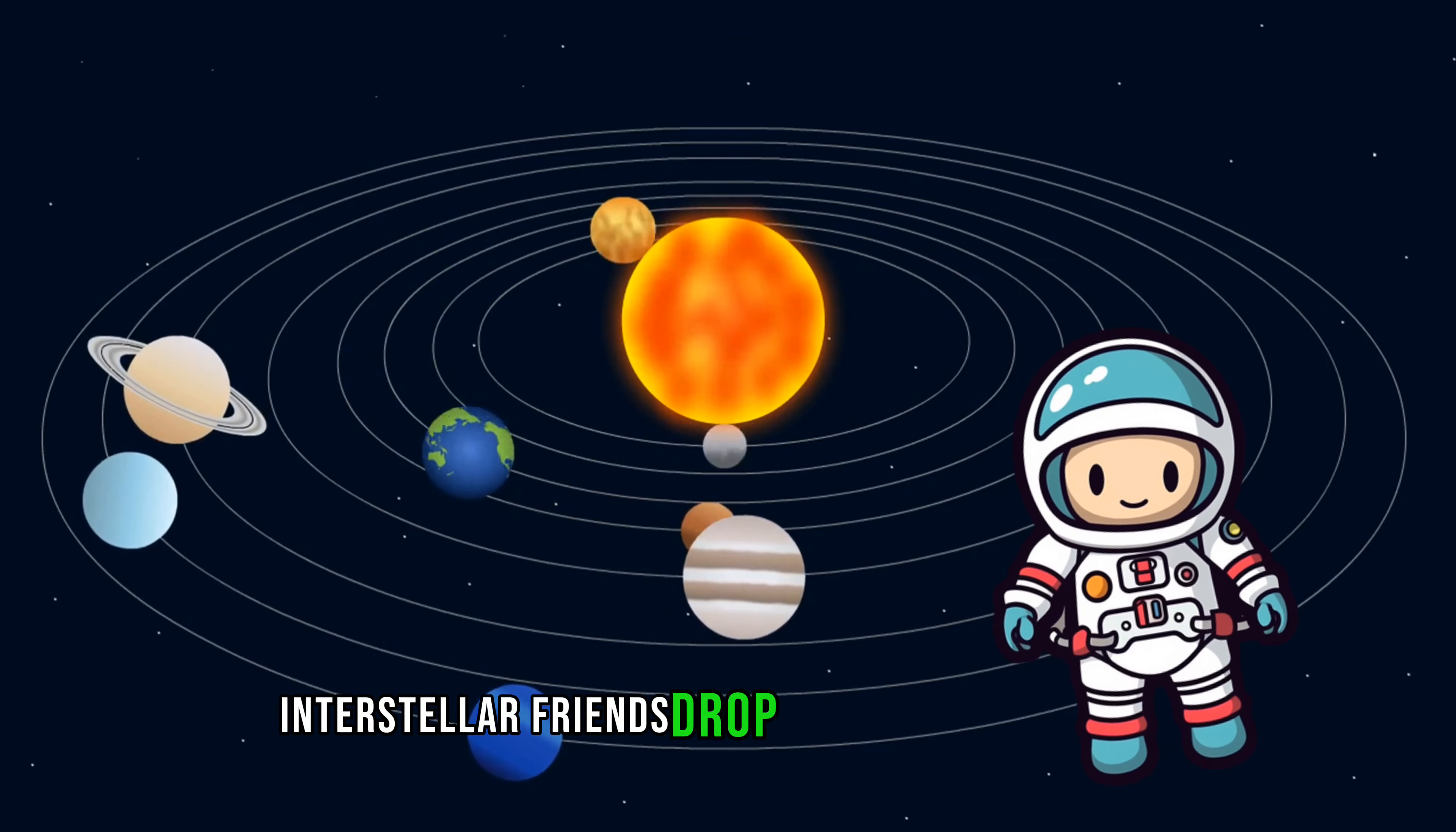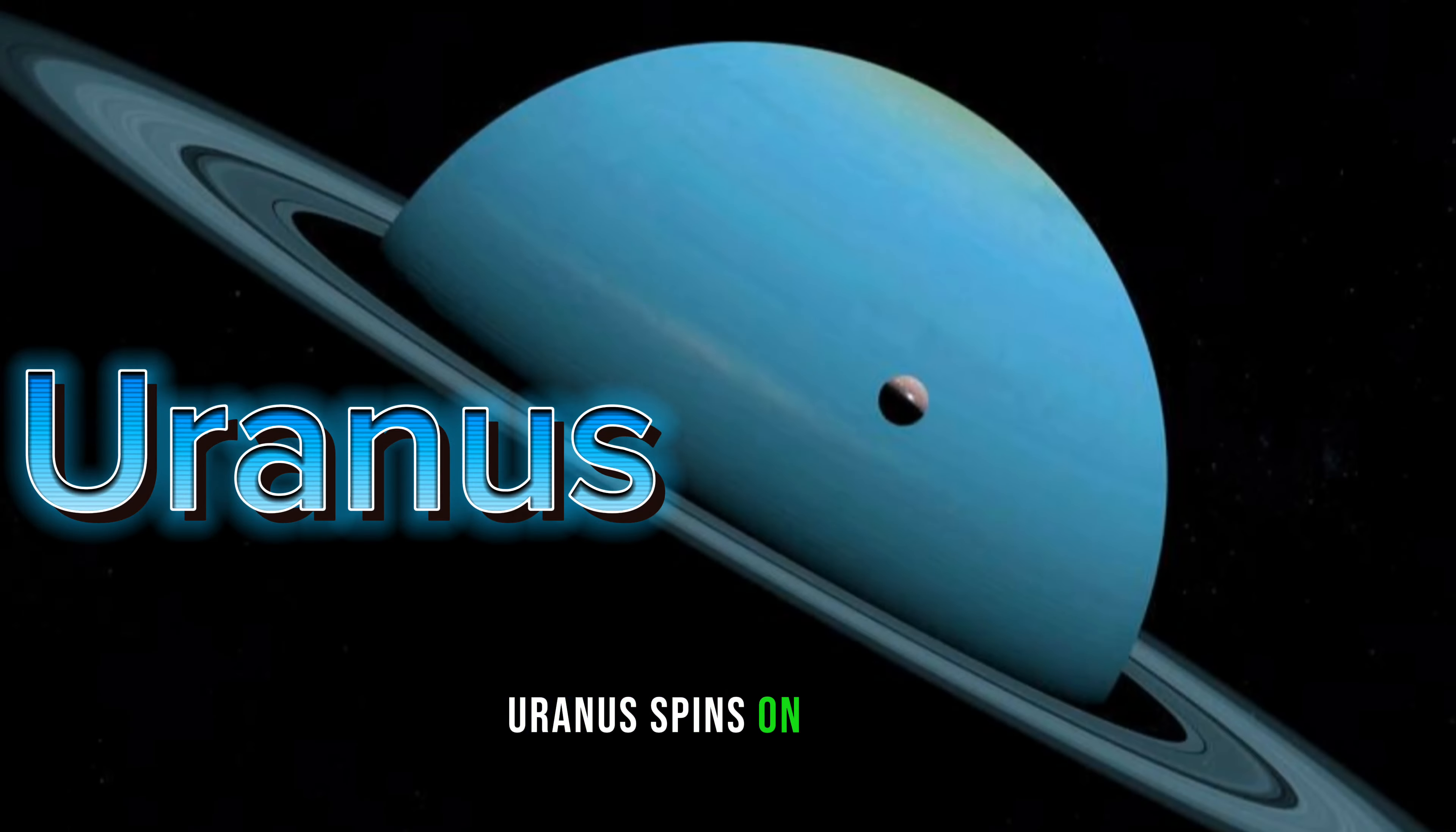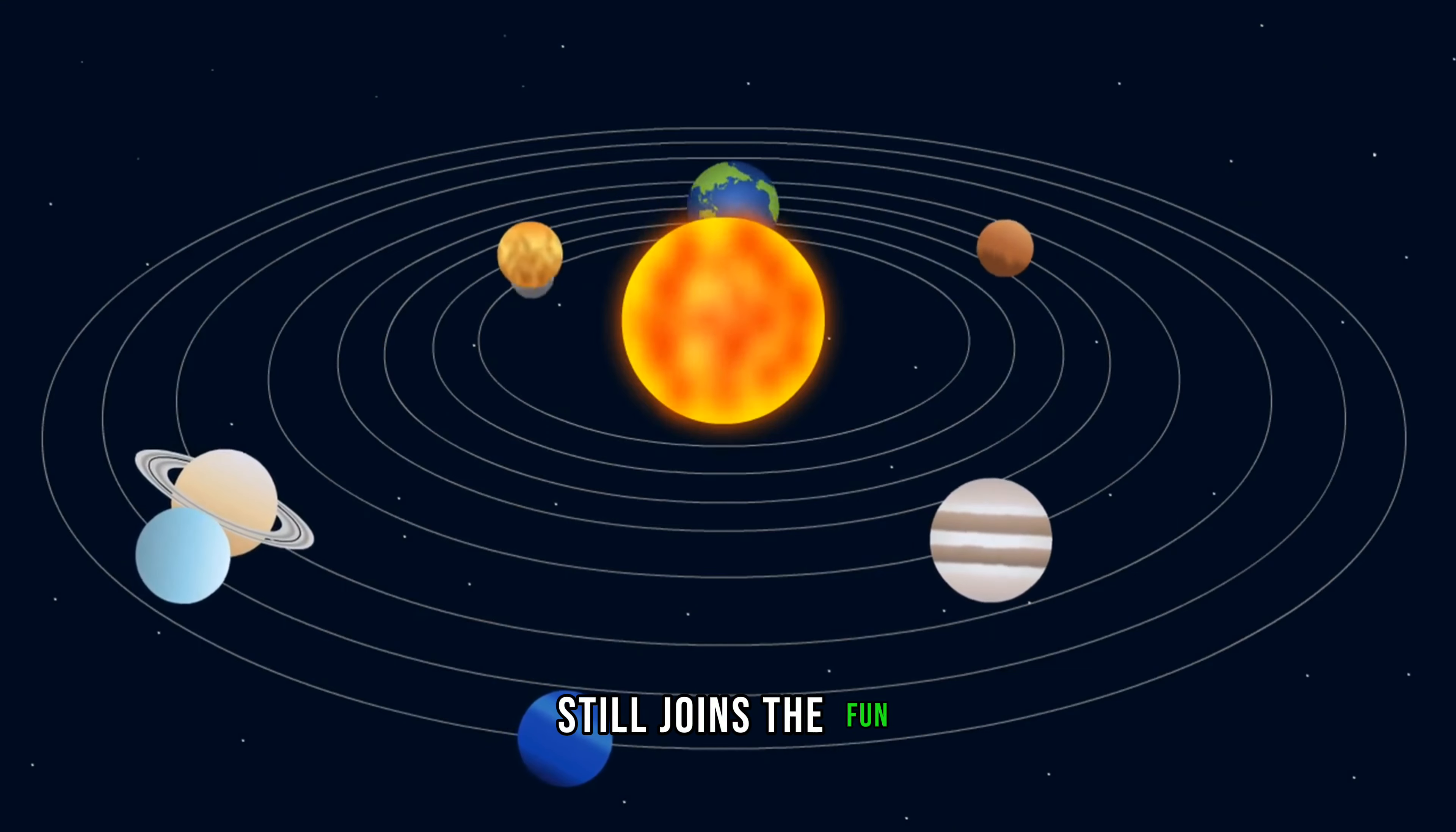Interstellar friends drop by with goofy grins and a friendly high. They teach us things from far and wide in this spacey wacky guide. Uranus spins on its side, taking a spacey funky glide. Pluto, once a planet, now a dwarf, still joins the fun twirling north.